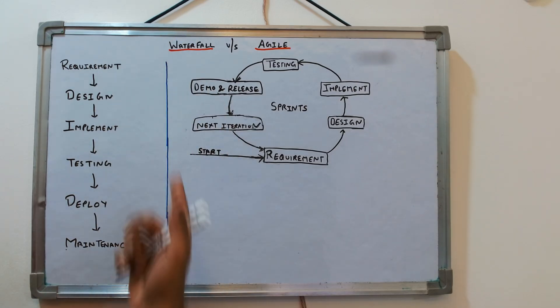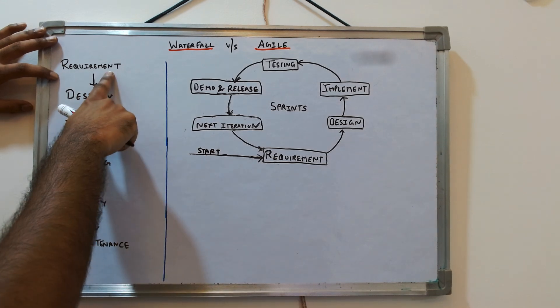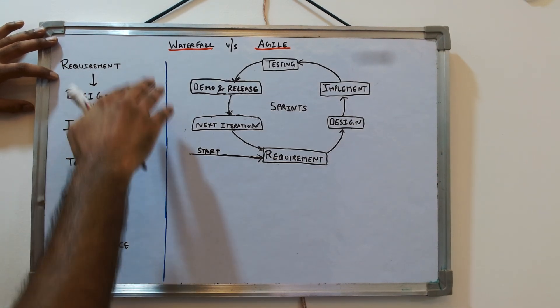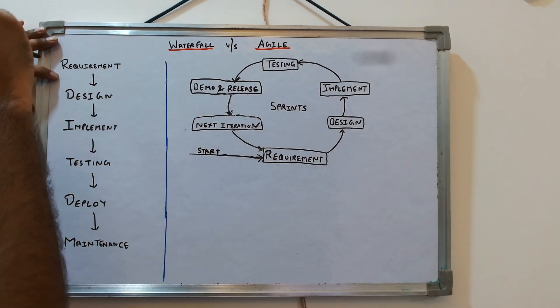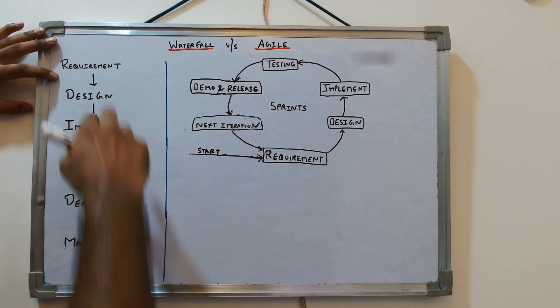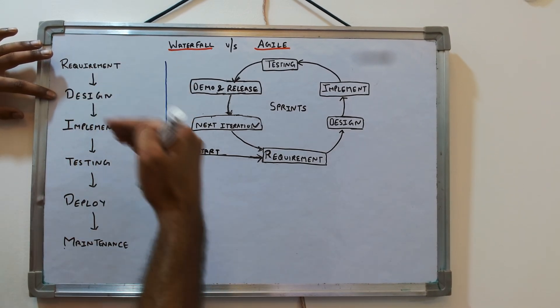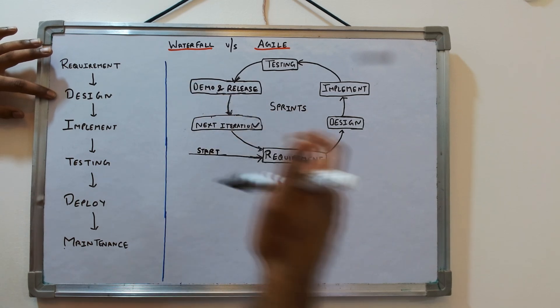Everybody knows the waterfall model. The first phase is requirement, where you sit with the client and understand what is actually required for a particular new feature which we have to deliver. Then you do a design, so each is separated by a proper phase.